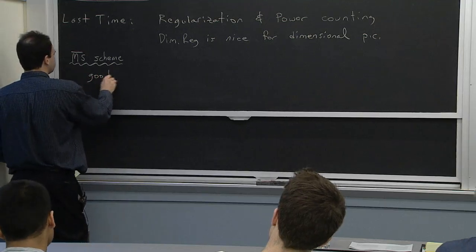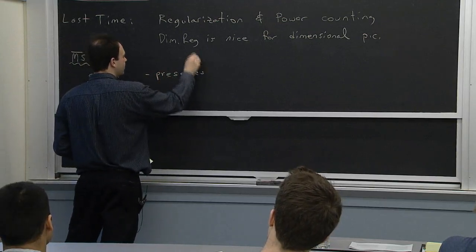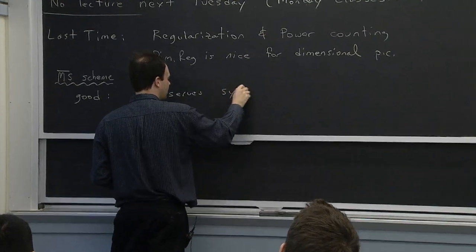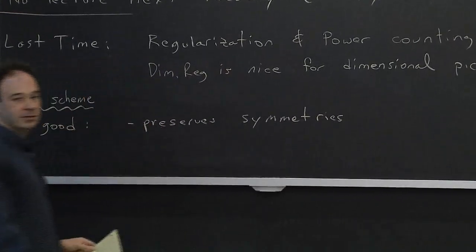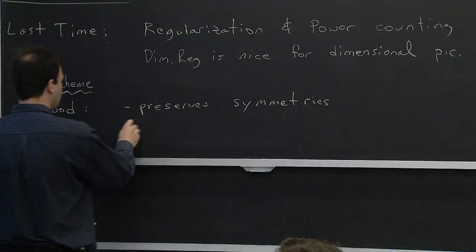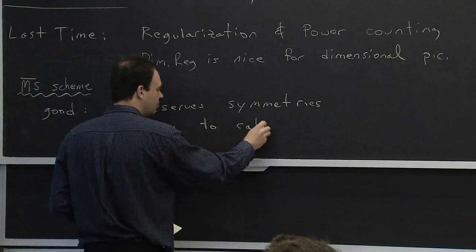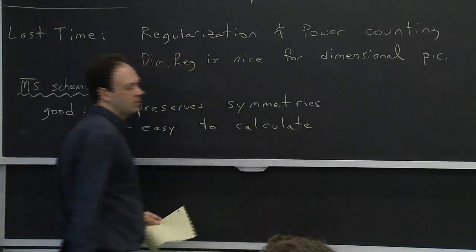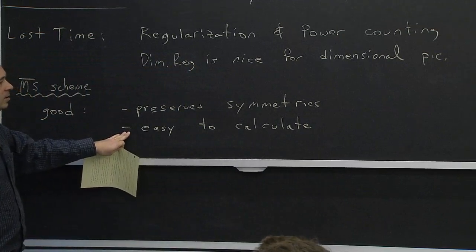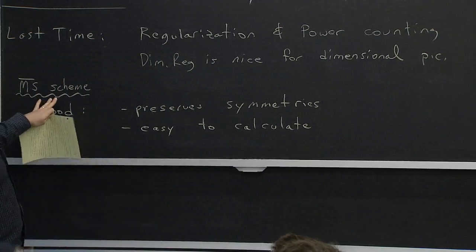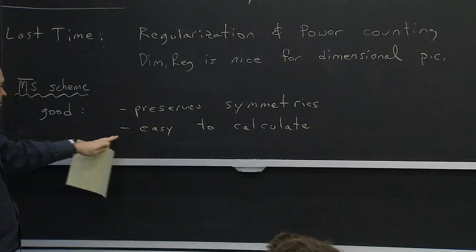Continuing with this discussion of dimensional regularization, we also have to pick a scheme. The scheme that is nice for dimensional regularization is the MS-bar scheme. It's good because it works in the context of dimensional regularization and preserves symmetries — gauge symmetry, Lorentz symmetry. In terms of doing calculations, it makes them technically easier. If you look at multi-loop calculations in the literature, they're all done in the MS-bar scheme, because you haven't introduced extra scales that would complicate your loop calculations.